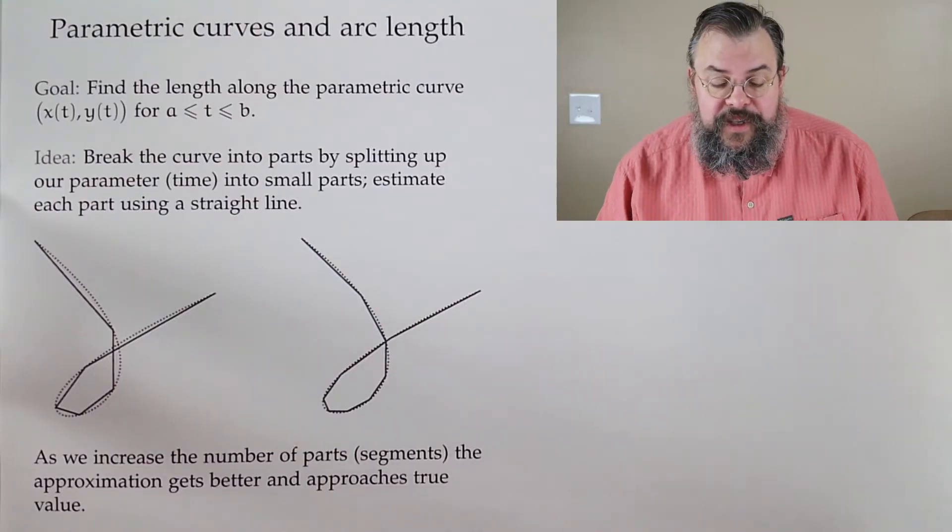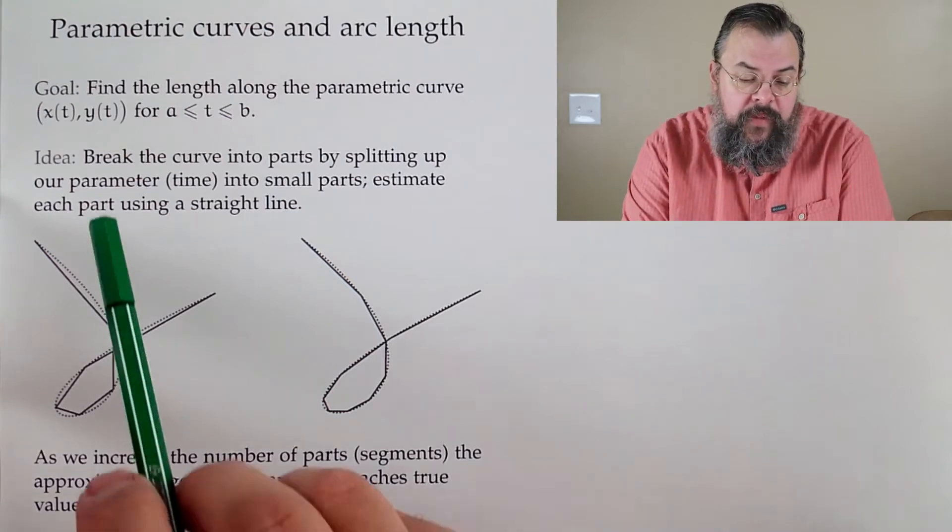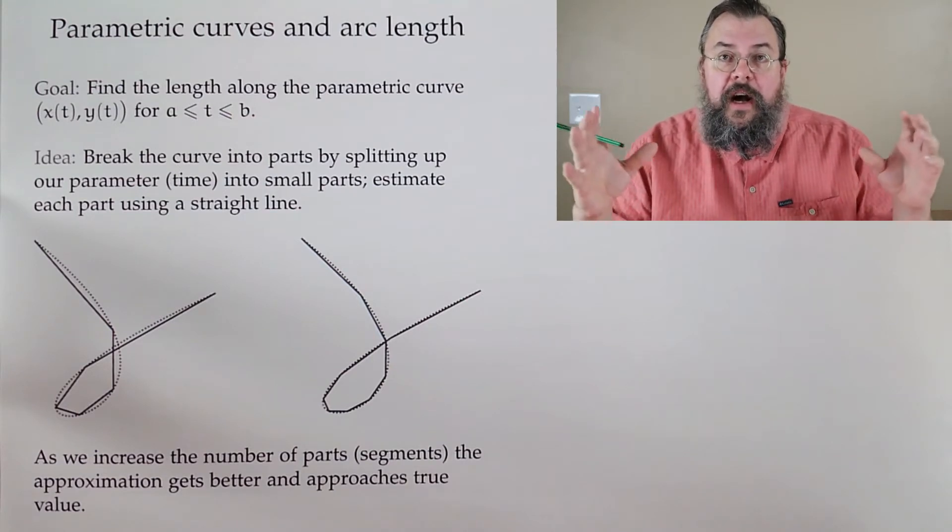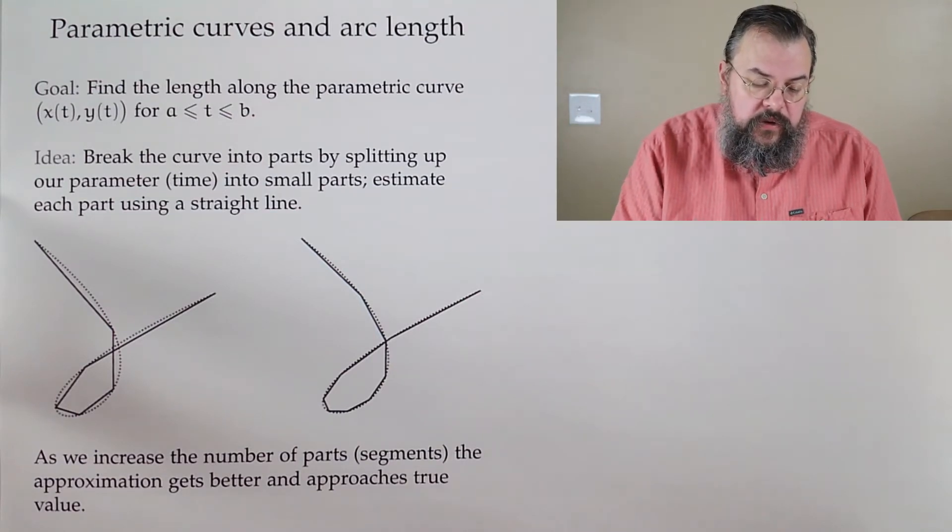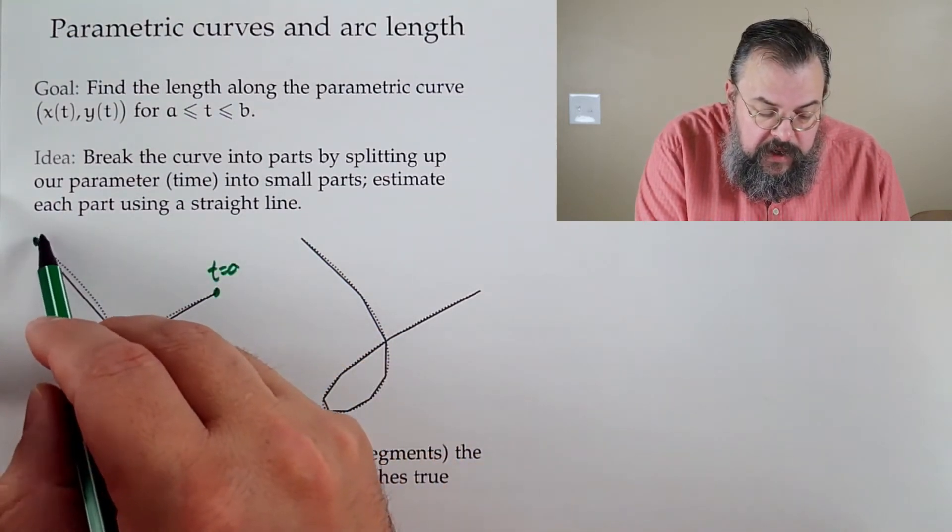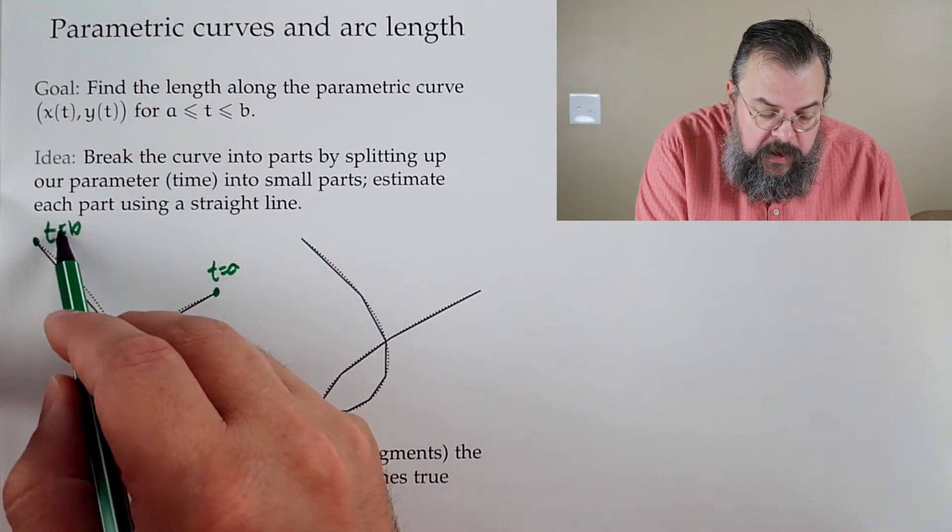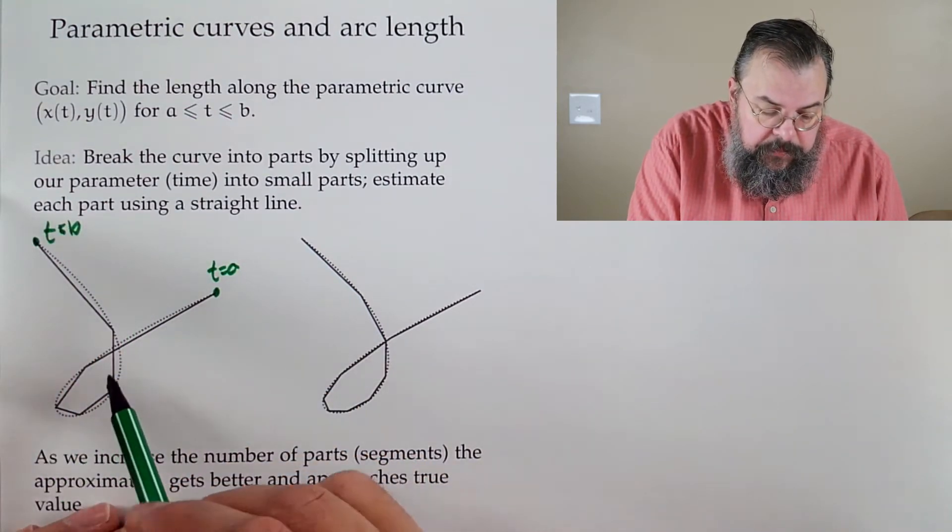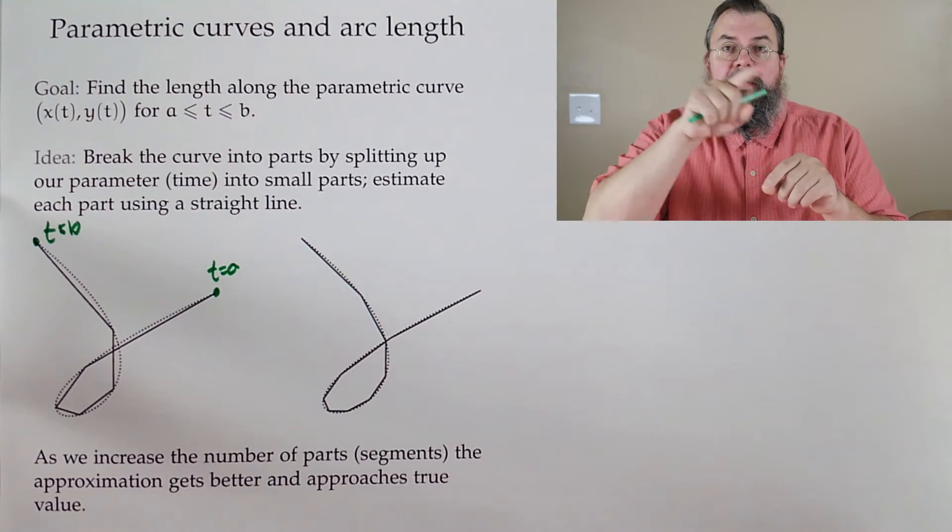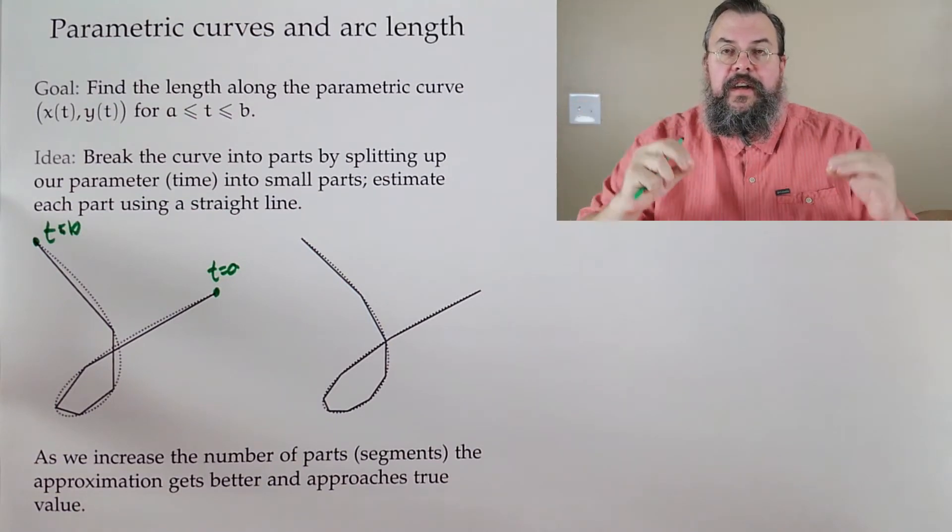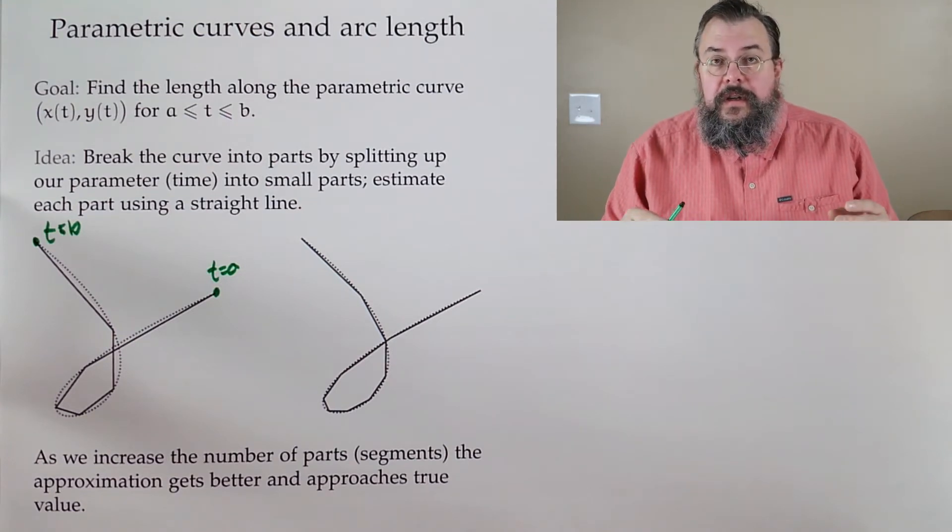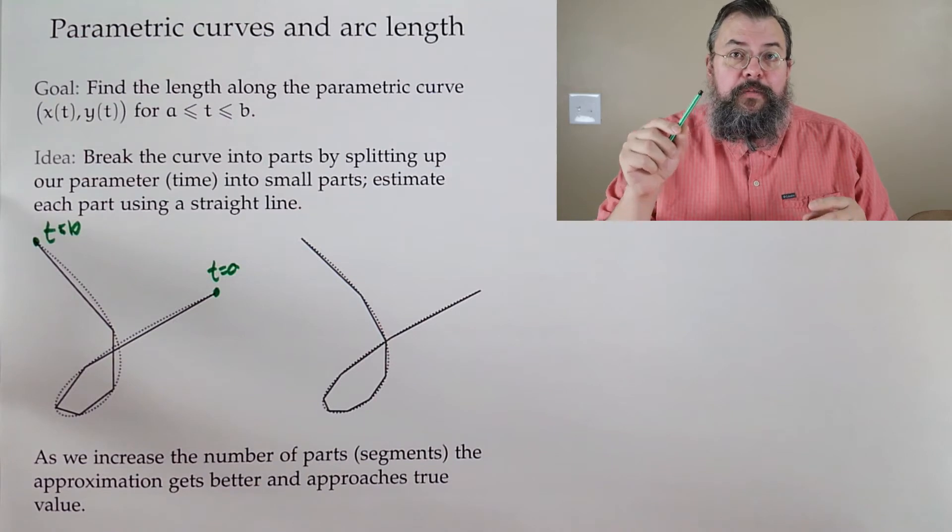We'll start with parametric curves and arc length. We want to find the length along a parametric curve, where our parameter, we like to think of as time, goes from a to b. For example, here is the time t equals a, over here is time t equals b, and we move along the dotted line. How do we find the length? What we'd like to do is take this curvy thing and sort of stretch it, and whatever it stretches to, measure that length. Can we do it? No, it's kind of hard.